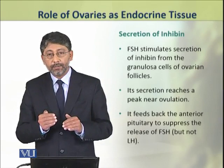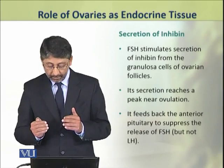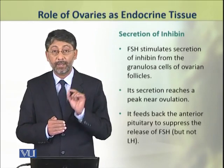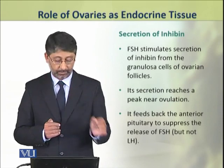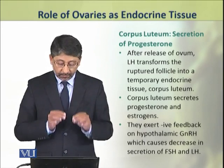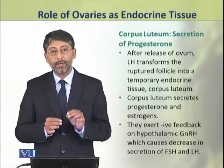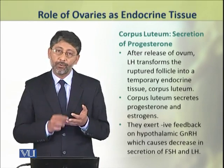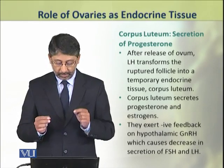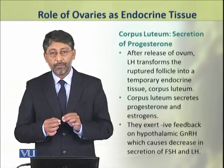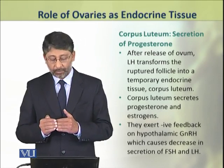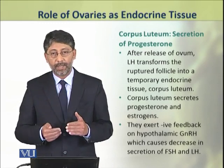Inhibin secretion reaches its peak near ovulation. It feeds back to the anterior pituitary to suppress the release of follicle stimulating hormone, but does not suppress the release of luteinizing hormone. When the ovum is released, luteinizing hormone transforms the ruptured follicle into a temporary endocrine tissue called the corpus luteum. The corpus luteum secretes estrogen and progesterone, which feed back negatively on the hypothalamic gonadotropin releasing hormone, causing a decrease in the secretion of both FSH and LH.